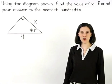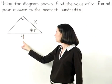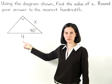Remember that the hypotenuse is always the side opposite the right angle, so our hypotenuse must be the side with a length of 4.